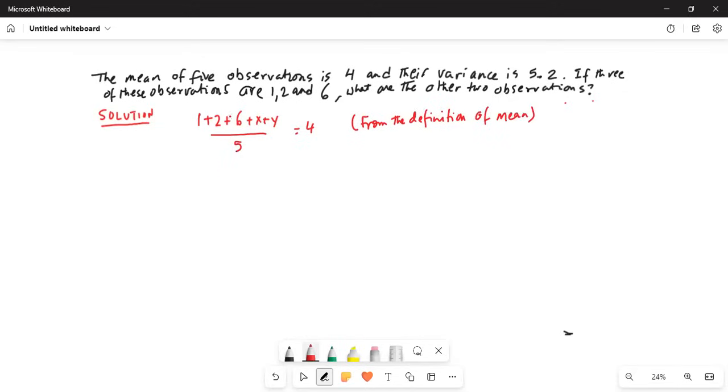So 6 plus 2 is 8 plus 1 is 9 plus x plus y divided by 5 is equal to 4. Multiply by 5 on both sides. We get this 5 and this 5 cancels. So 9 plus x plus y equal to 5 times 4 is 20 and subtract 9 on both sides. x plus y is equal to 11.